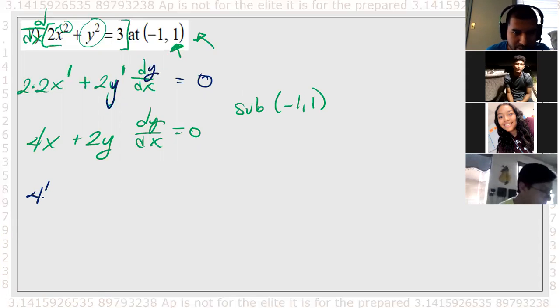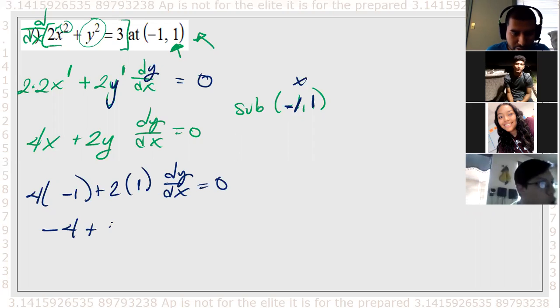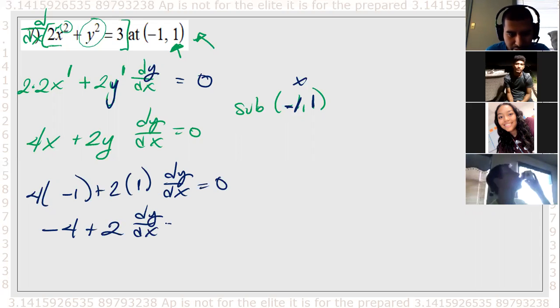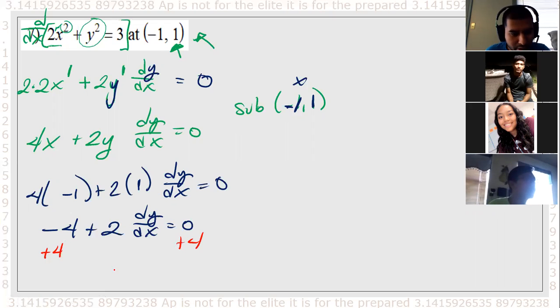It's going to be 4 times the x value, which is a negative one, right? Negative one plus 2 times my y value, which is 1, dy/dx equals zero. So it gives me negative 4 plus 2 dy/dx equals zero. So all I have to do is solve for it. So that 4, I'm going to move it to the other side. I'm doing plus 4, plus 4.